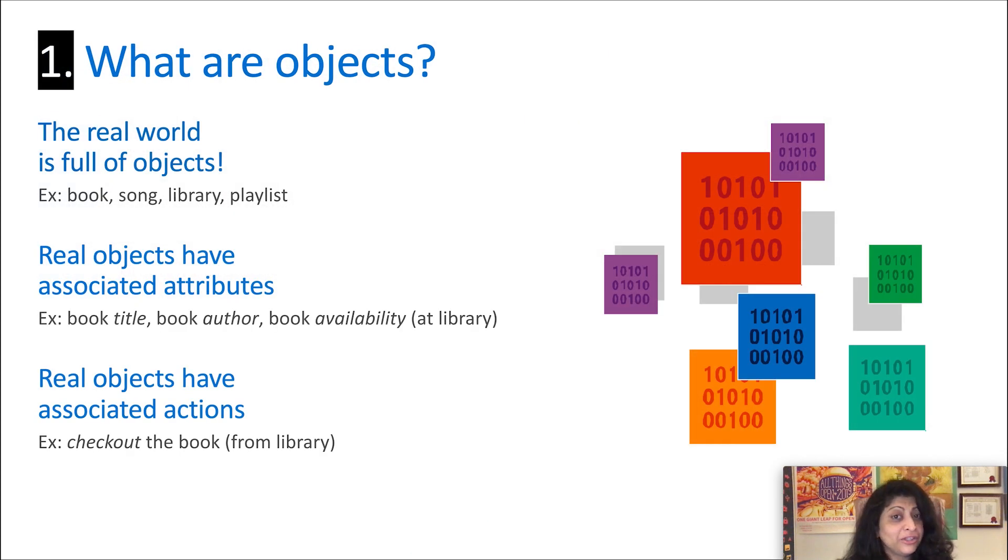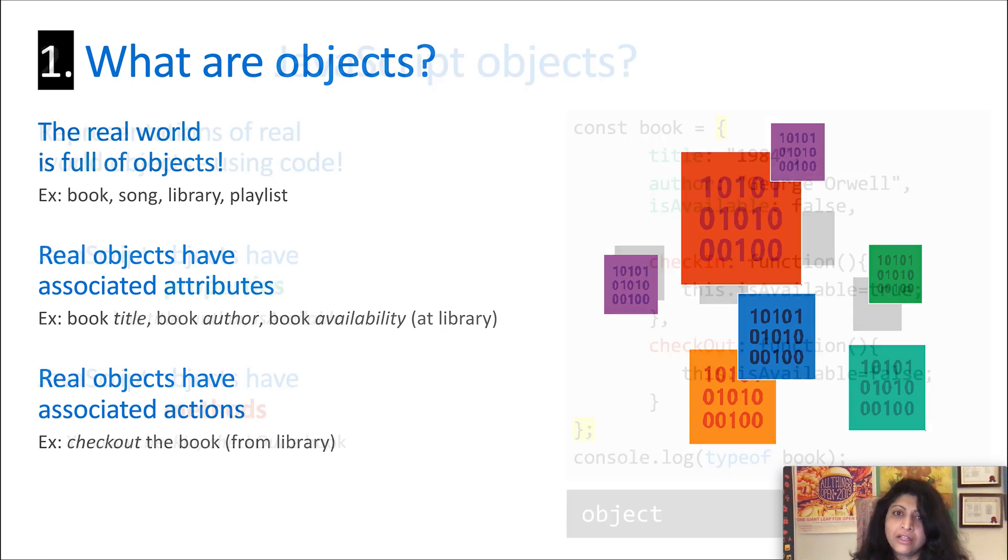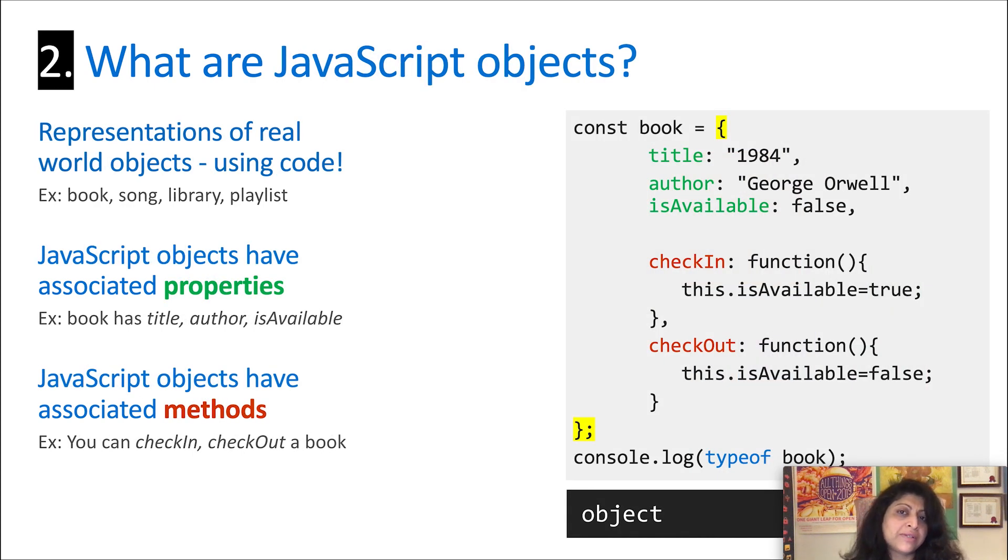First, what are objects? You encounter a lot of objects in the real world. You have books that are in libraries. You have songs that live in playlists. Each one of these has two different things that make them useful to us. First, they have attributes, data that describe them. So a book has a title, an author, and maybe if it's in a library it has a status that tells you whether it's available or not. Similarly, they have actions you can take on them. So you can check in or check out a book from the library. JavaScript objects are a way for you to represent these real world objects in code.